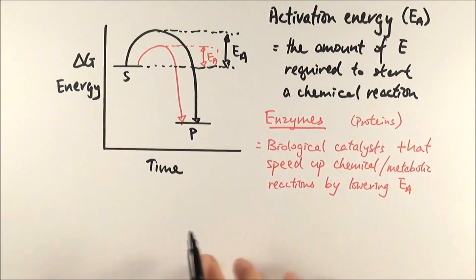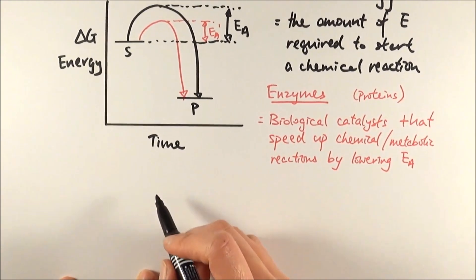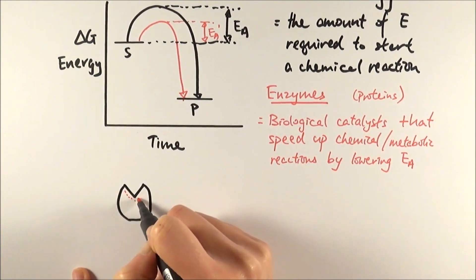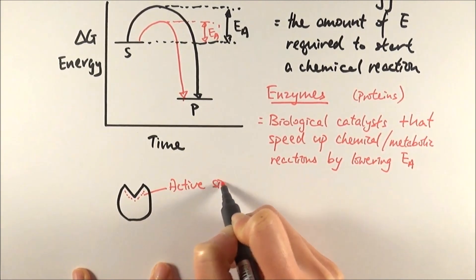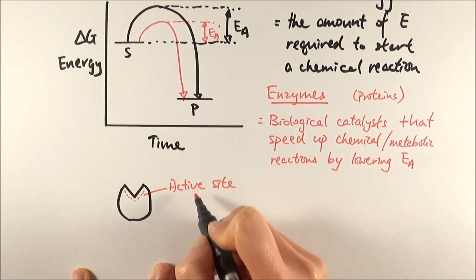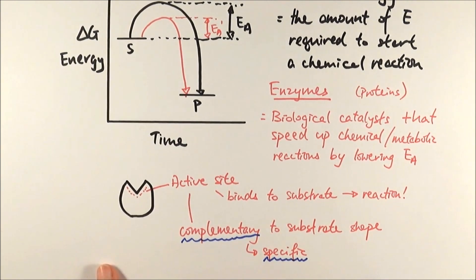If we draw a very simplistic drawing of an enzyme that looks like this, you can see that it's of a very specific shape, and we call this particular part of the enzyme the active site. The active site is the part of the protein or the enzyme that binds to the substrate, which is the chemical that it reacts with. We say that the active site is complementary to the substrate shape, and that is specific to a particular chemical.